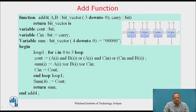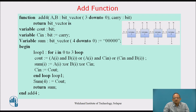To implement this, let us write a function. Function 'add4' takes parameters A and B — both bit vectors of 3 downto 0 — and another parameter 'carry' which is of type bit, and it returns a bit vector. We need some additional variables: variable 'cout' of type bit, variable 'cin' also of type bit initialized to 'carry' — so whatever carry you are passing to the function, 'cin' is initialized to that. Then another variable 'sum' which we are going to return, declared as bit vector 4 downto 0, initialized to all zeros. When adding two 4-bit numbers, the maximum result is 5 bits, hence sum is declared as a 5-bit bit vector.